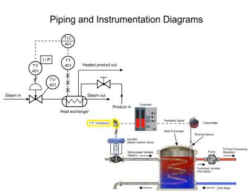The transducer converts an electronic signal to a pressure signal and is indicated by the square containing the letters I and P. The line with diagonal marks designates a pneumatic connection.